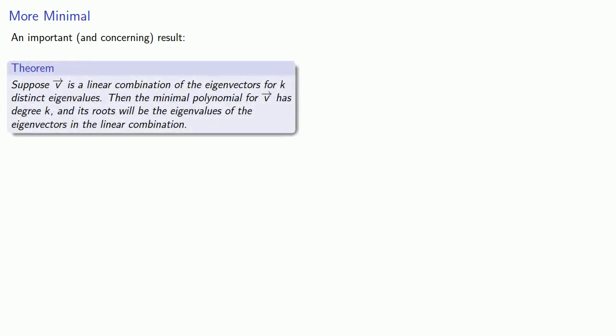Now that's very good, but there's a more important and somewhat concerning result. Suppose my vector v is a linear combination of the eigenvectors for k distinct eigenvalues. Then the minimal polynomial for v has degree k, and the roots will be eigenvalues of the eigenvectors of the linear combination. We won't prove this. We have to leave something for exercises.